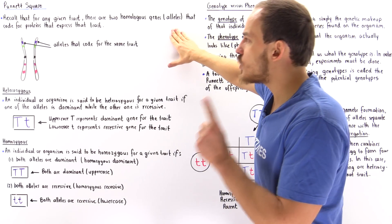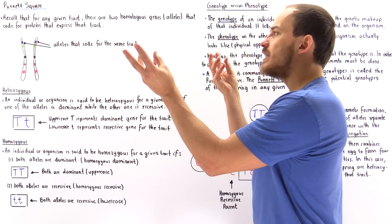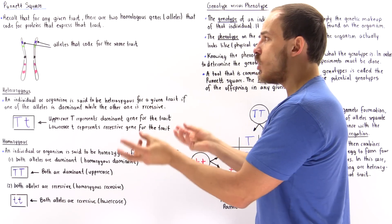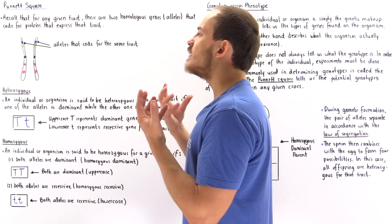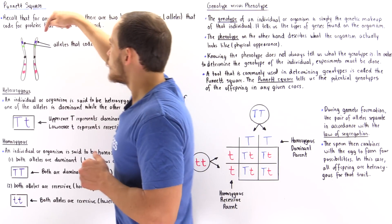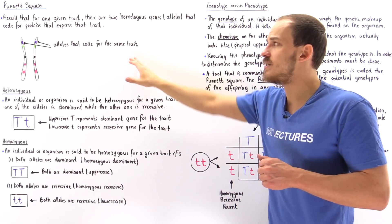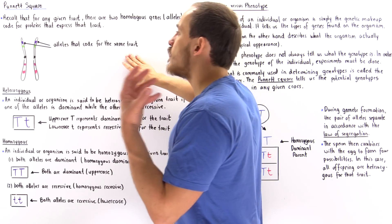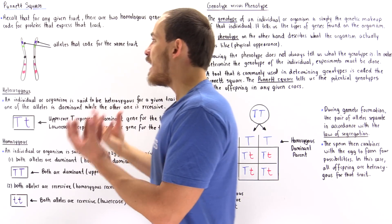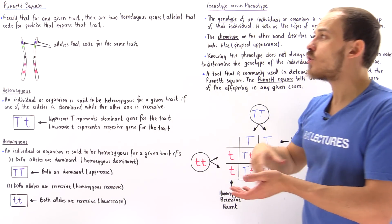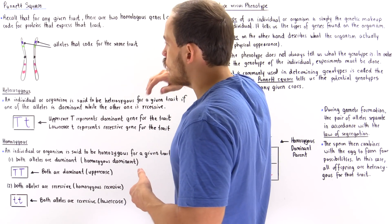These pairs of homologous genes are also known as alleles. Alleles are basically genes found on the two different homologous chromosomes that code for proteins expressing that same type of trait. So the two purple genes are alleles because they code for proteins that express the same height trait, and the two green genes are alleles because they code for proteins expressing the same seed color trait.